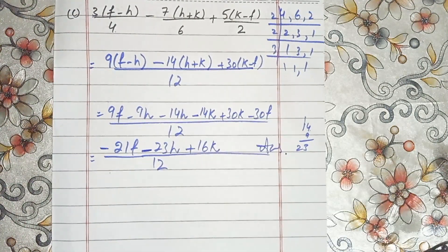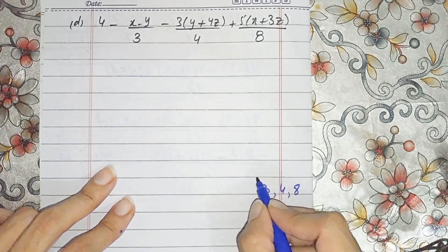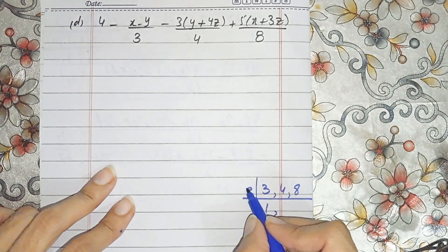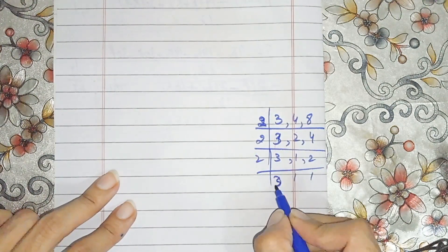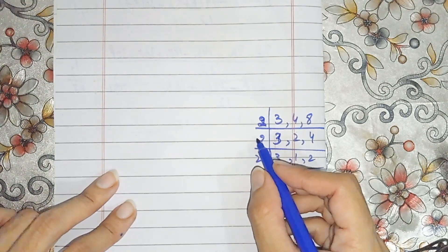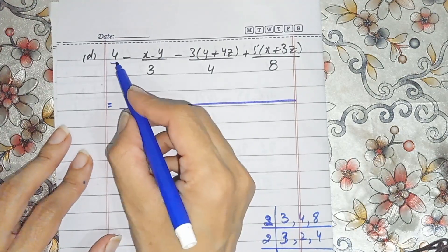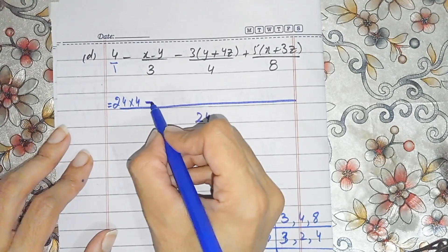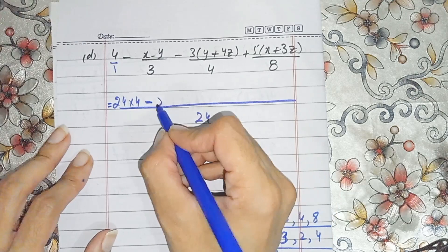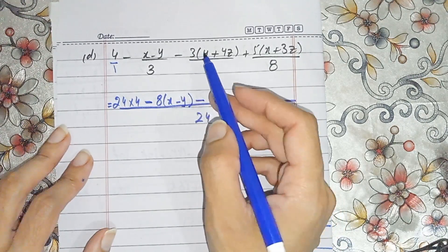Now part d. We take the LCM of 3, 4, and 8. Factoring: 2 times 4 is 8, 3 times 1 and 2; into 1, 3, and 3; 3 times 1 is 3, 2 times 6 is 12, 2 times 12 is 24. The LCM is 24. So 24 divided by 4 gives 6, divided by 3 gives 8, and divided by 8 gives 3 — multiply accordingly.